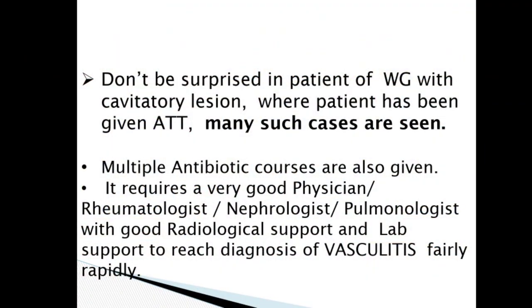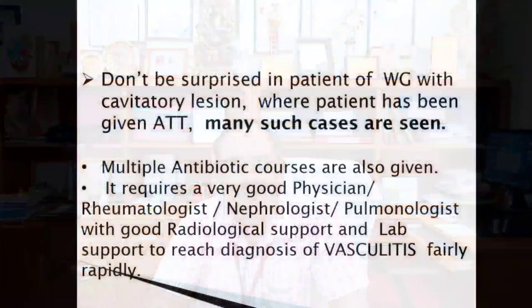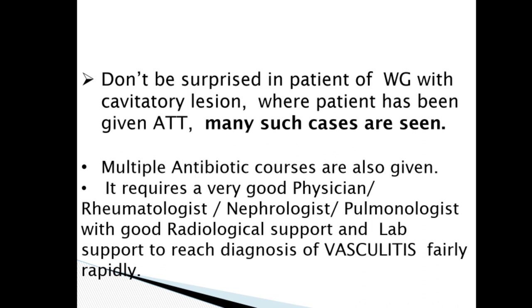Don't be surprised in a patient of vasculitis with a cavitatory lesion where the patient has been given ATT. During my training at AIIMS, I recollect at least two cases where the patient had vasculitis but because they had cavitating lesions in the lung, they were thought to have tuberculosis, although AFB was negative. Such cases do come. It requires a competent physician, rheumatologist, nephrologist, pulmonologist, with good radiological and lab support to reach a diagnosis of vasculitis fairly rapidly.